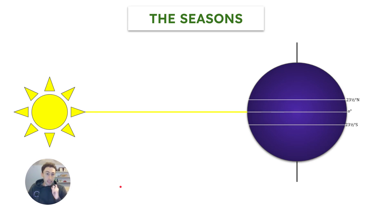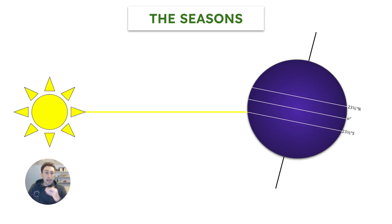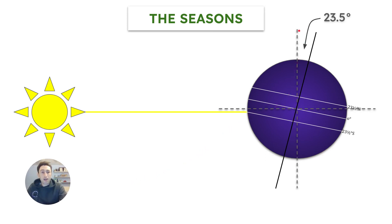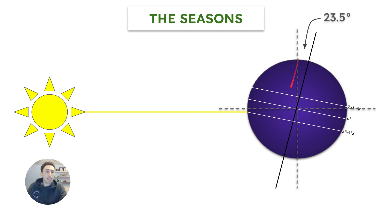The Earth is not straight. The Earth is actually tilted at an angle of 23 and a half degrees on a line that is perpendicular to the plane of the Earth's orbit. This line makes a 90-degree angle with the plane of the Earth's orbit. You can see this is the axial tilt — tilted back 23 and a half degrees. And this tilt will cause different seasons.